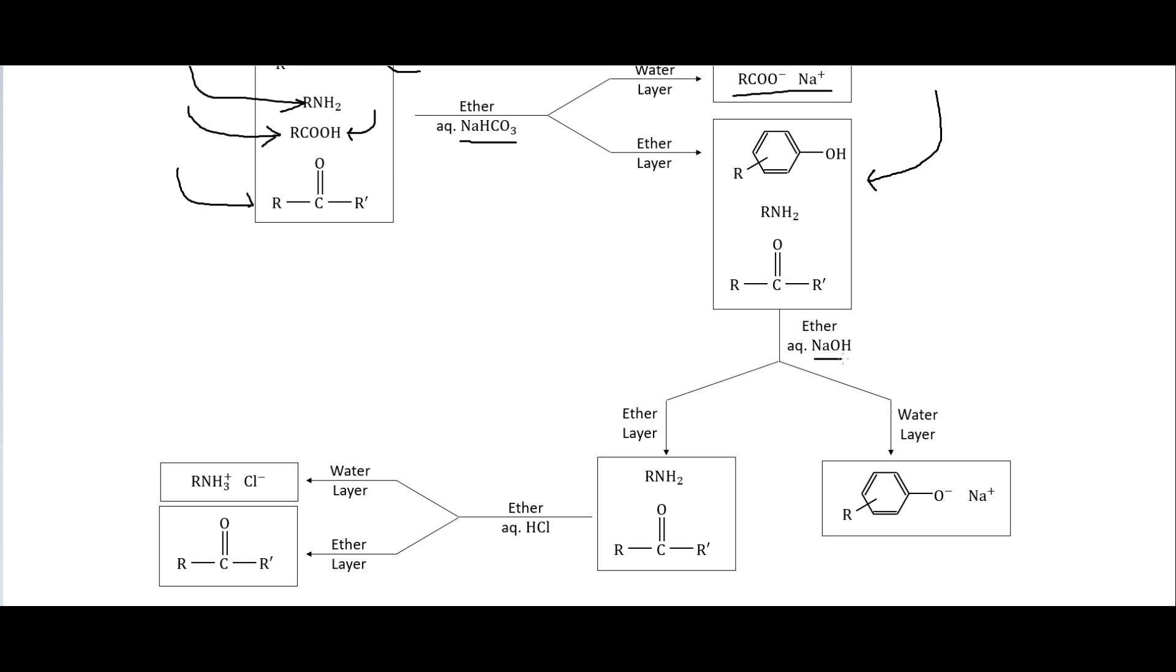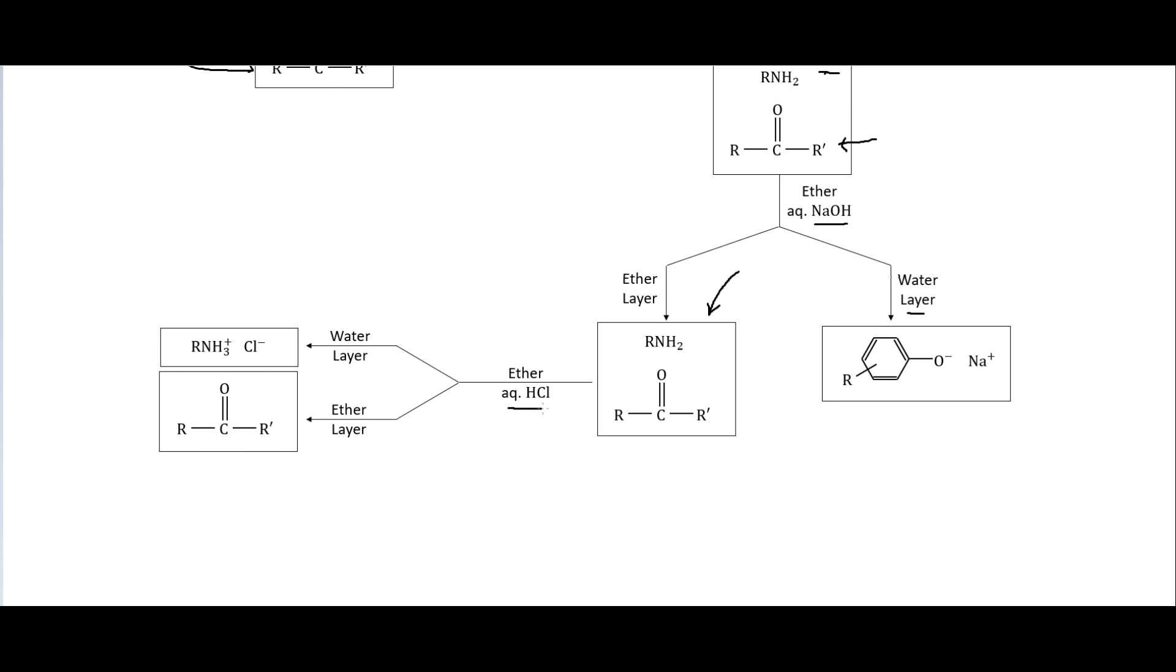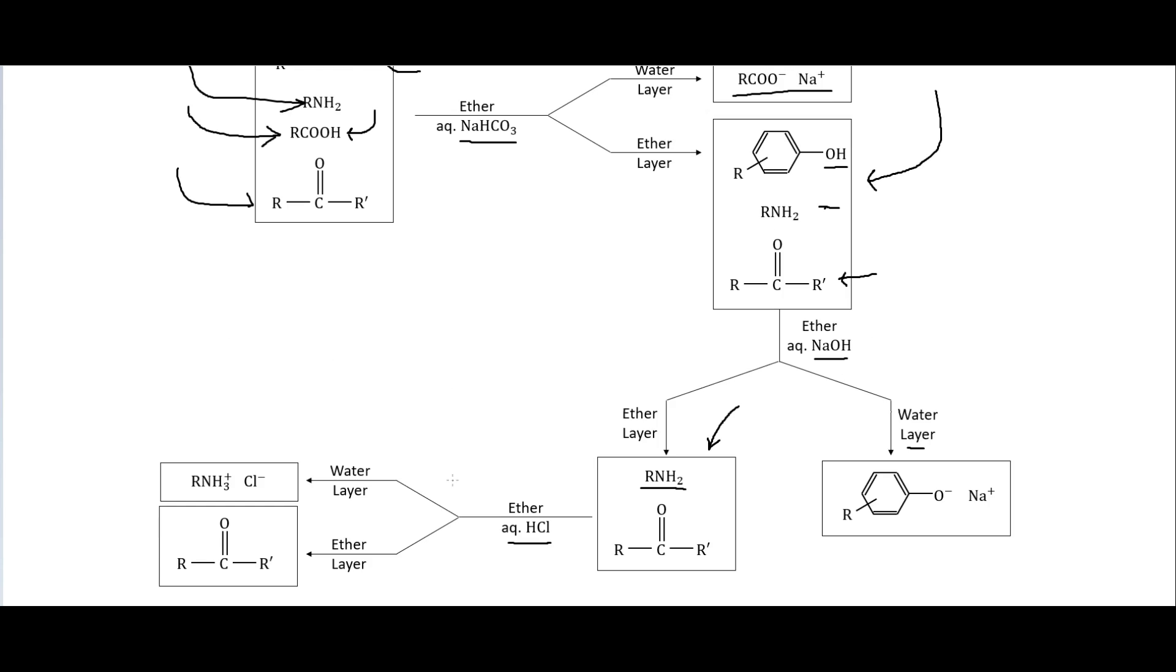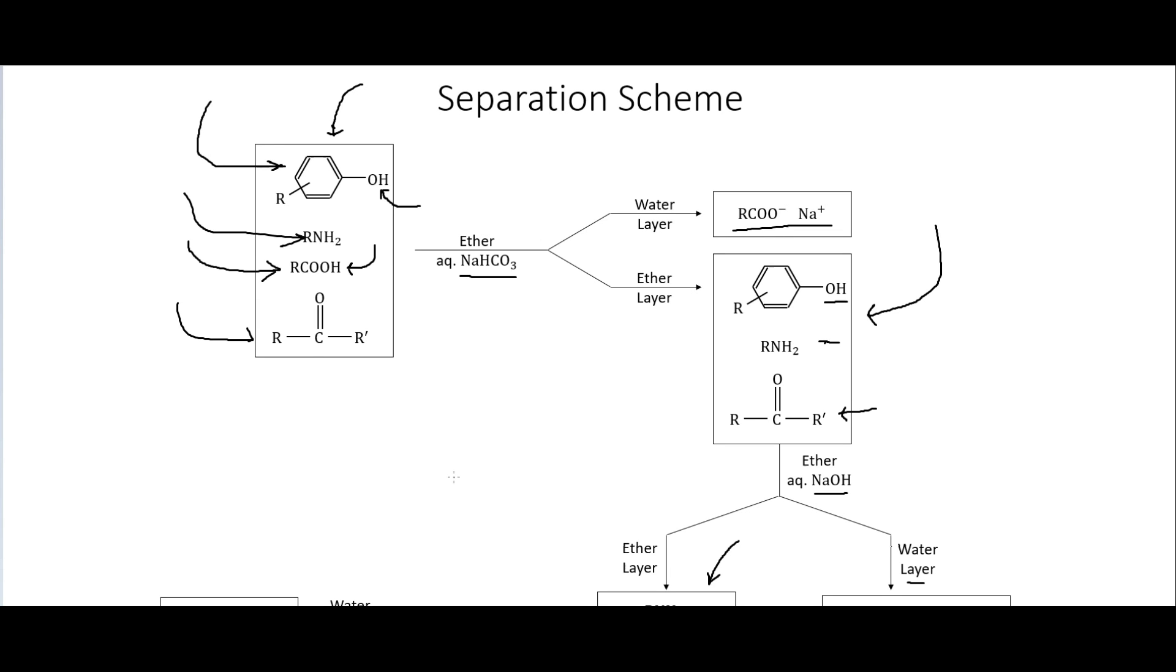Now we can use a stronger base which will deprotonate this. And so that will go into the water layer while the amine and the ketone stay in the ether layer. So we end up with just those in our organic solvent. Now we can add HCl which will protonate our amine here. And so that will become charged and go into the water layer while the ketone here stays in the ether layer. And so we have now separated all four of those things from each other using this separation. And so having a separation scheme like this as I said is necessary because you want to know at each step what molecules are going where. And so you don't end up dumping out the thing that you're actually trying to get.